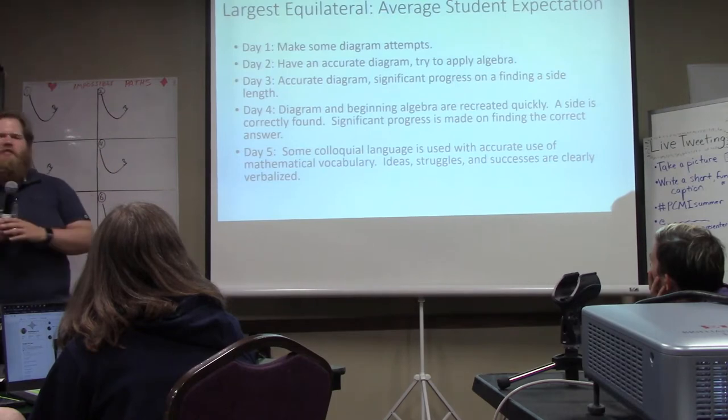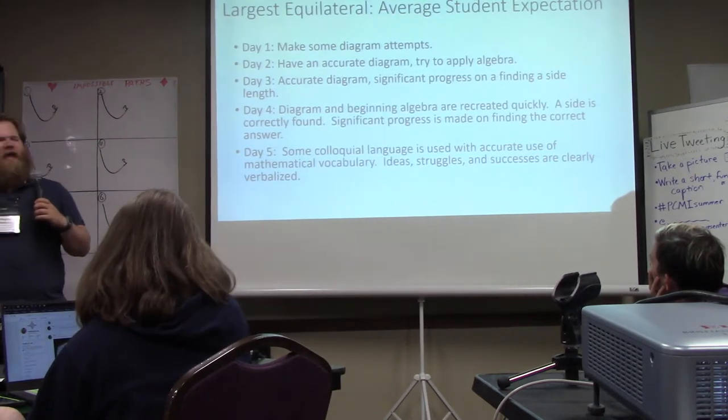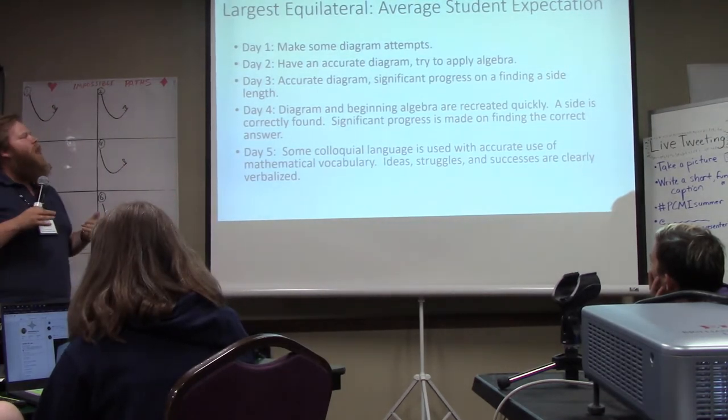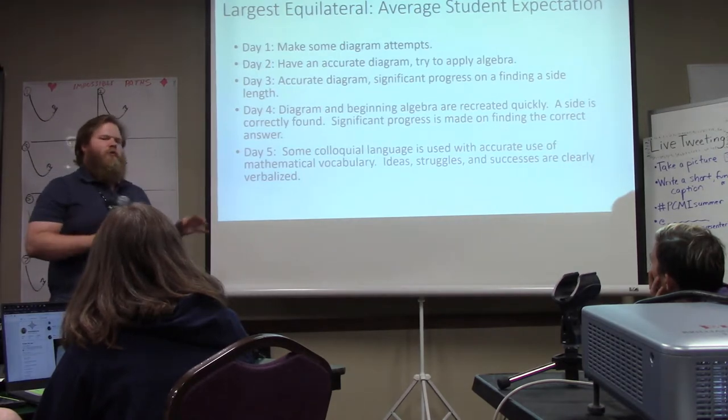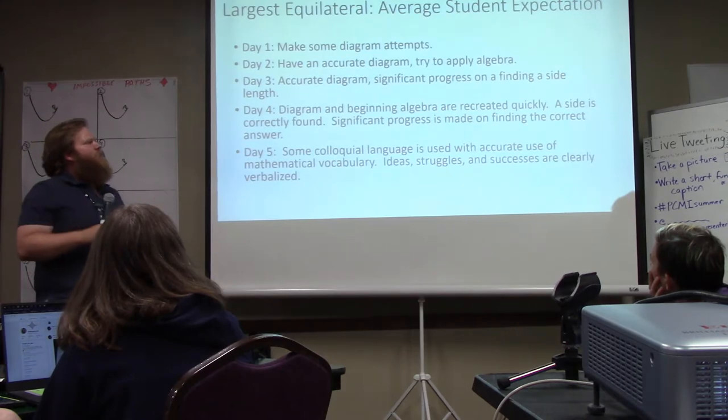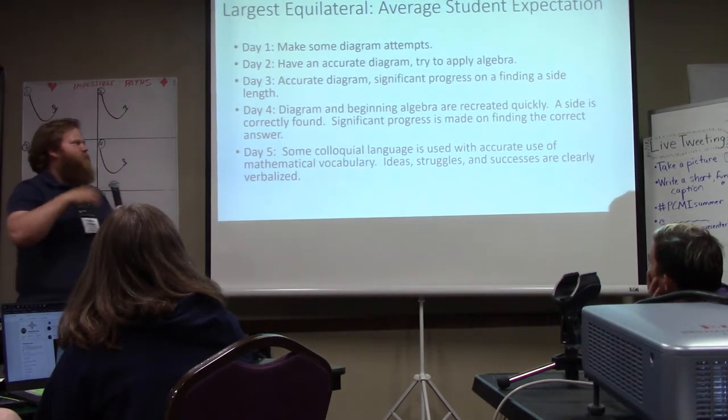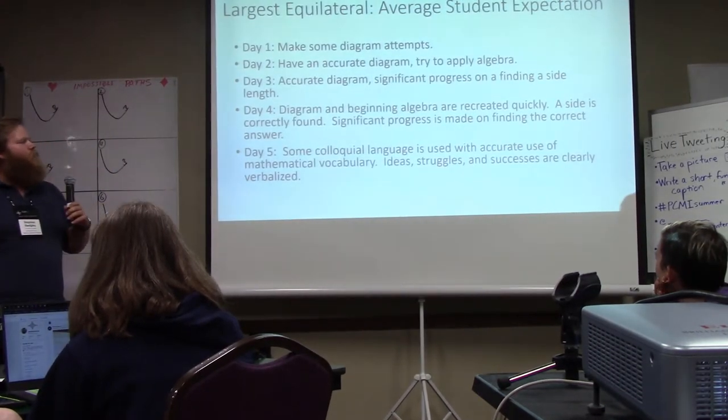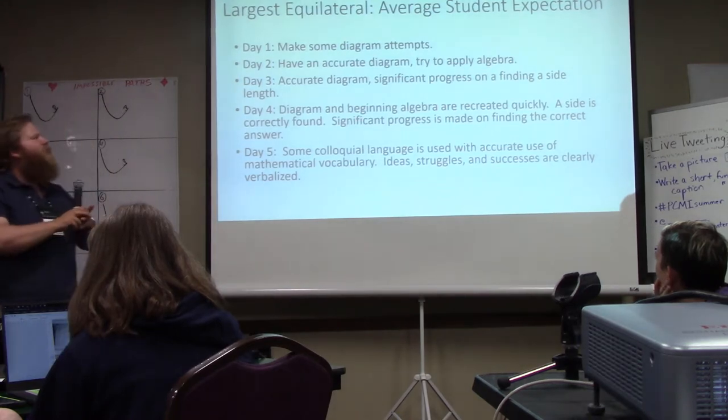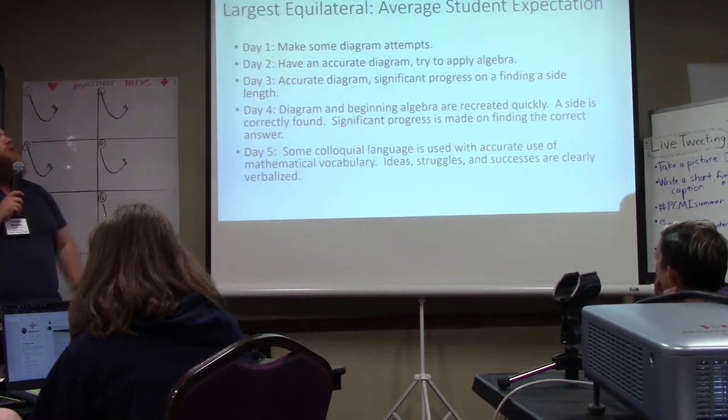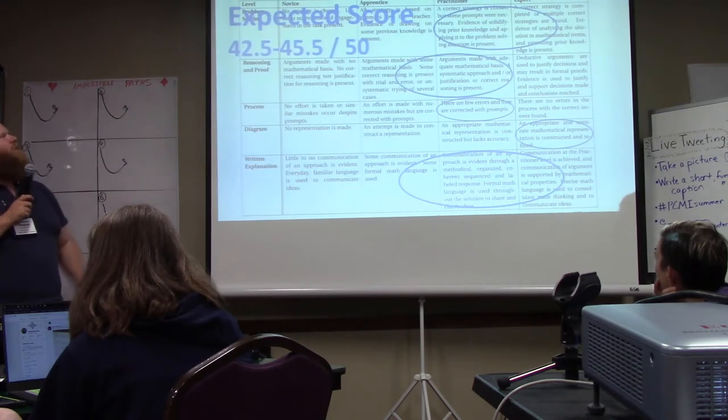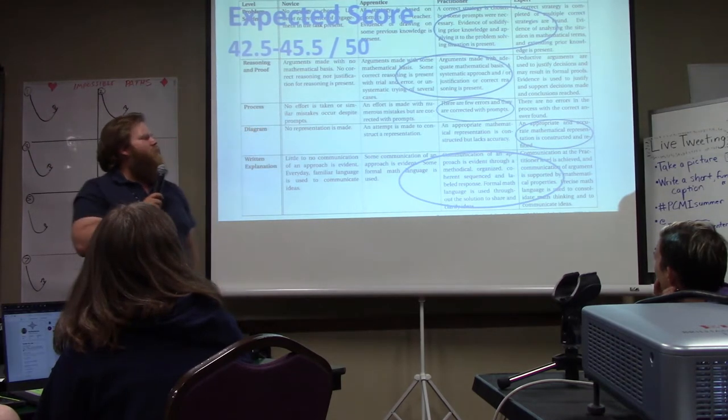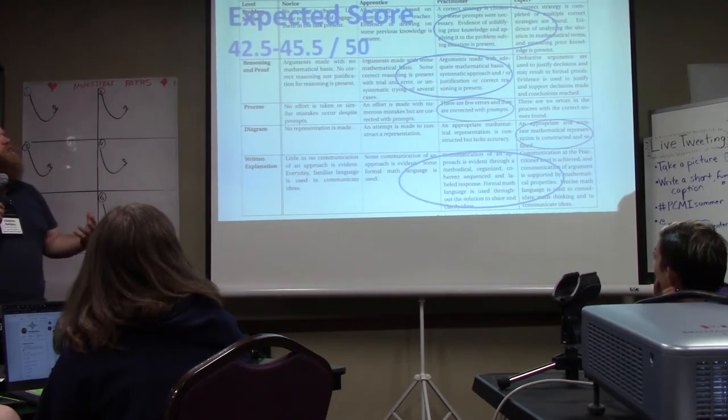So average student. This is kind of the week process of where I expect kind of the average student to be. So first day, try some diagrams. Maybe one of them is going to be right. Second day, they have that accurate diagram from suggestions that I made, and they start trying to use algebra. Third day, they're actually getting through that algebra a little bit, some mistakes. Fourth day, they've corrected their mistakes and they're getting almost to the answer. And their explanation is decent, not great. So where they get circled on the rubric is right in there. So they're getting like a 42.5 to a 45.5, and I'm circling somewhere in those bubbles, usually for an average student.